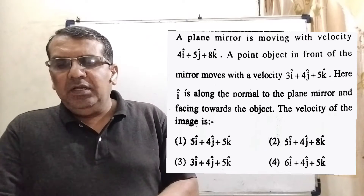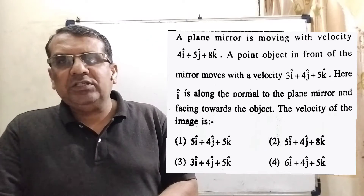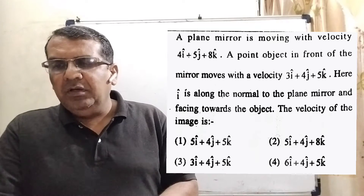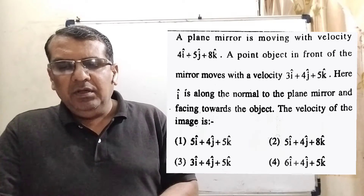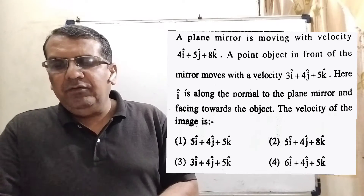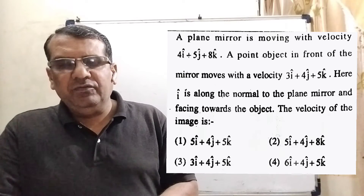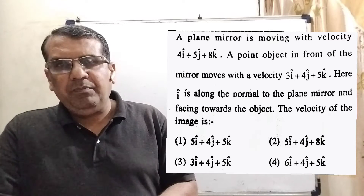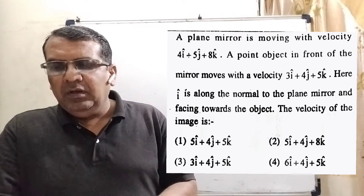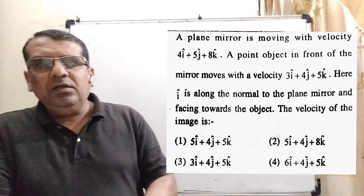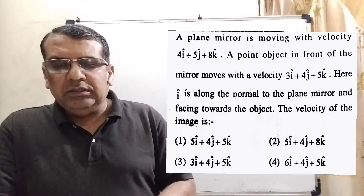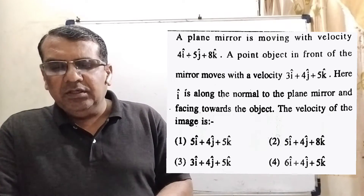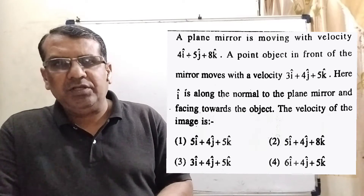A plane mirror is moving with velocity 4i-cap plus 5j-cap plus 8k-cap. A point object in front of the mirror moves with velocity 3i-cap plus 4j-cap plus 5k-cap. Here, the i unit vector is along the normal to the plane mirror and facing towards the object. The velocity of the image is?